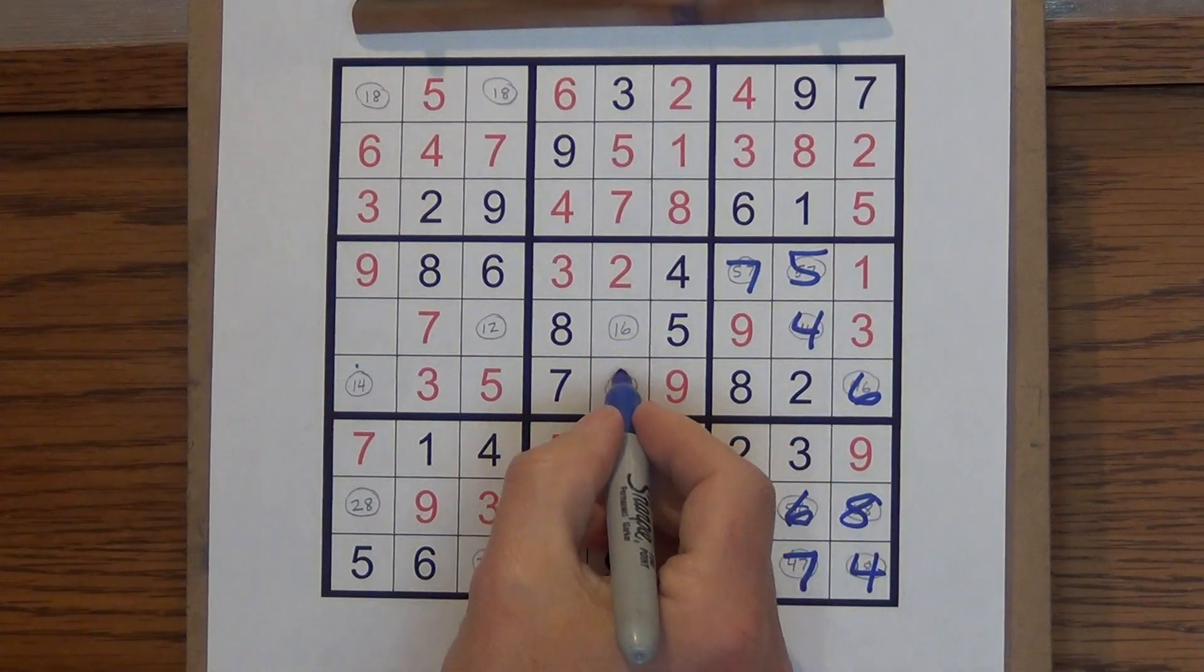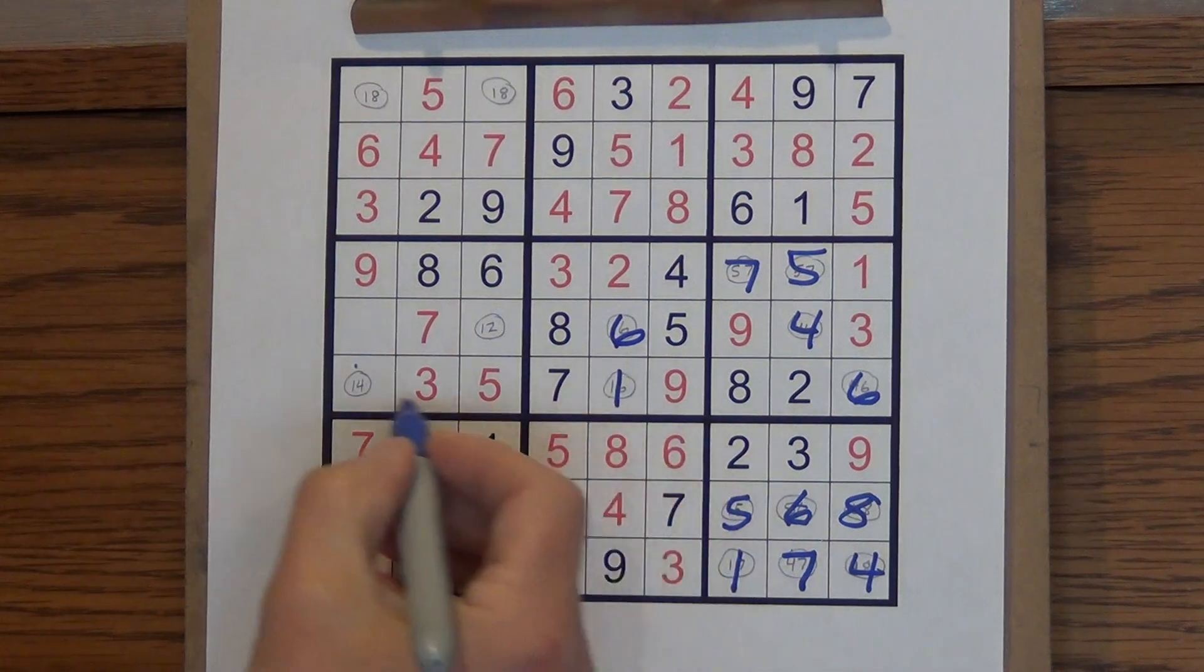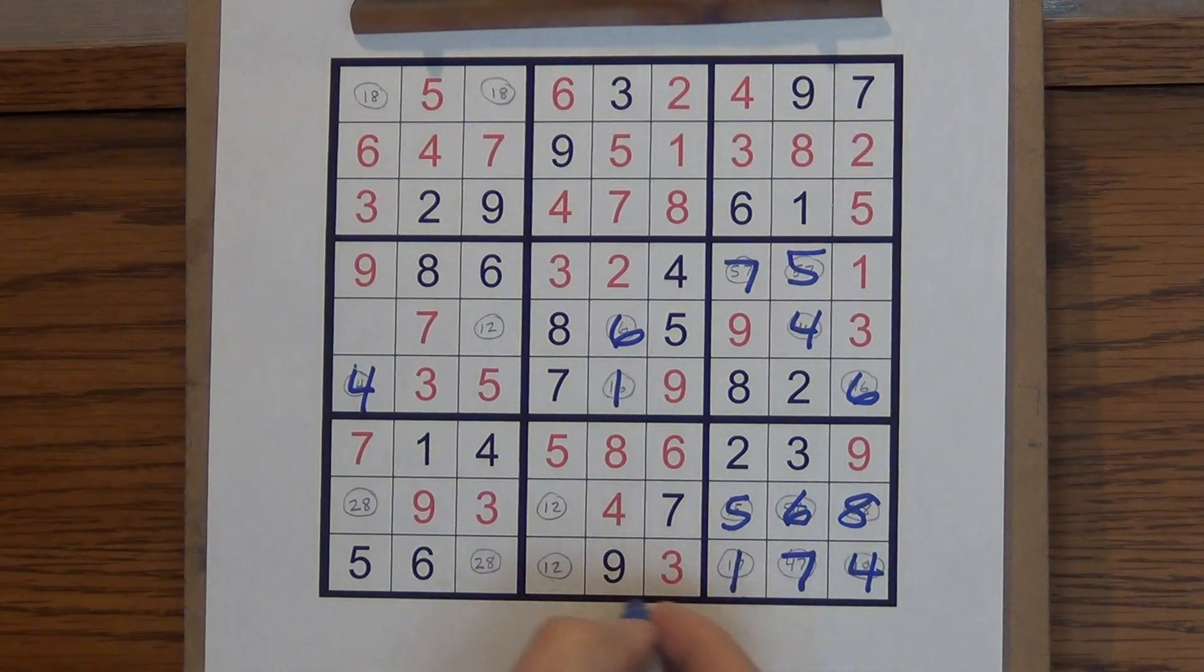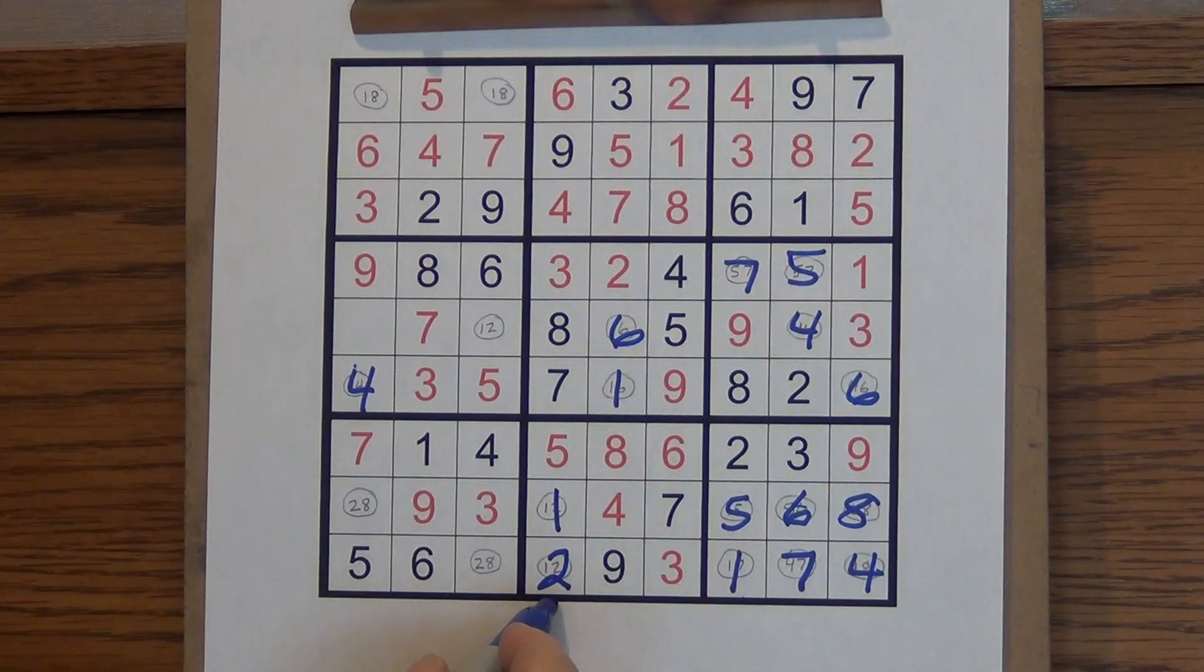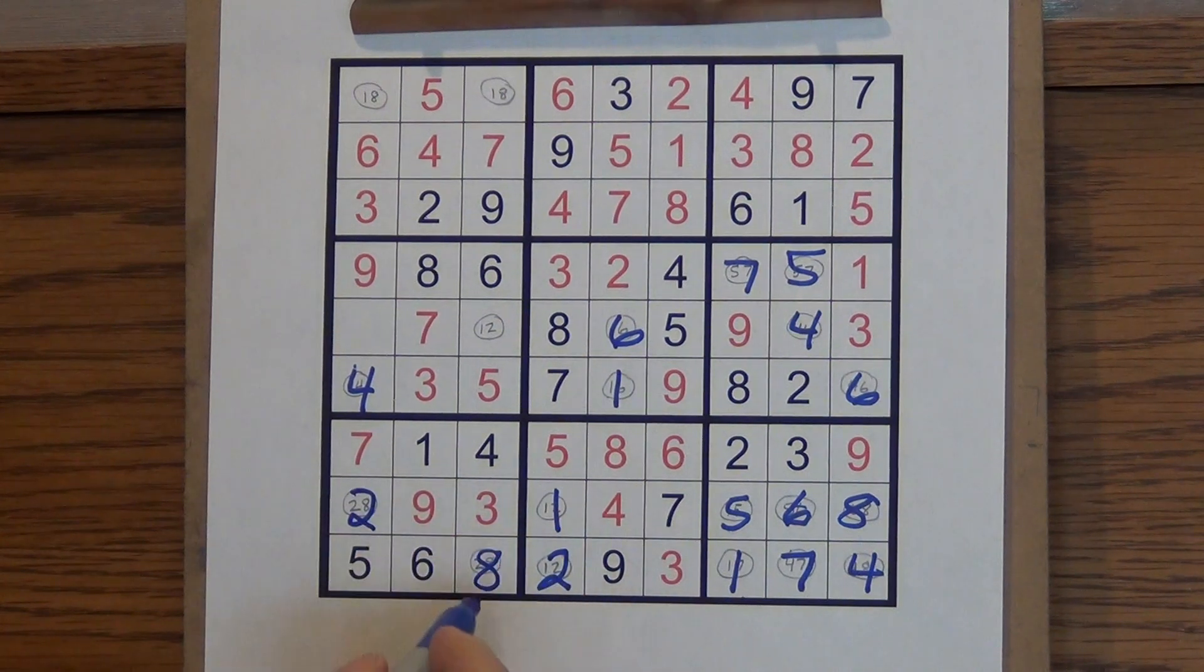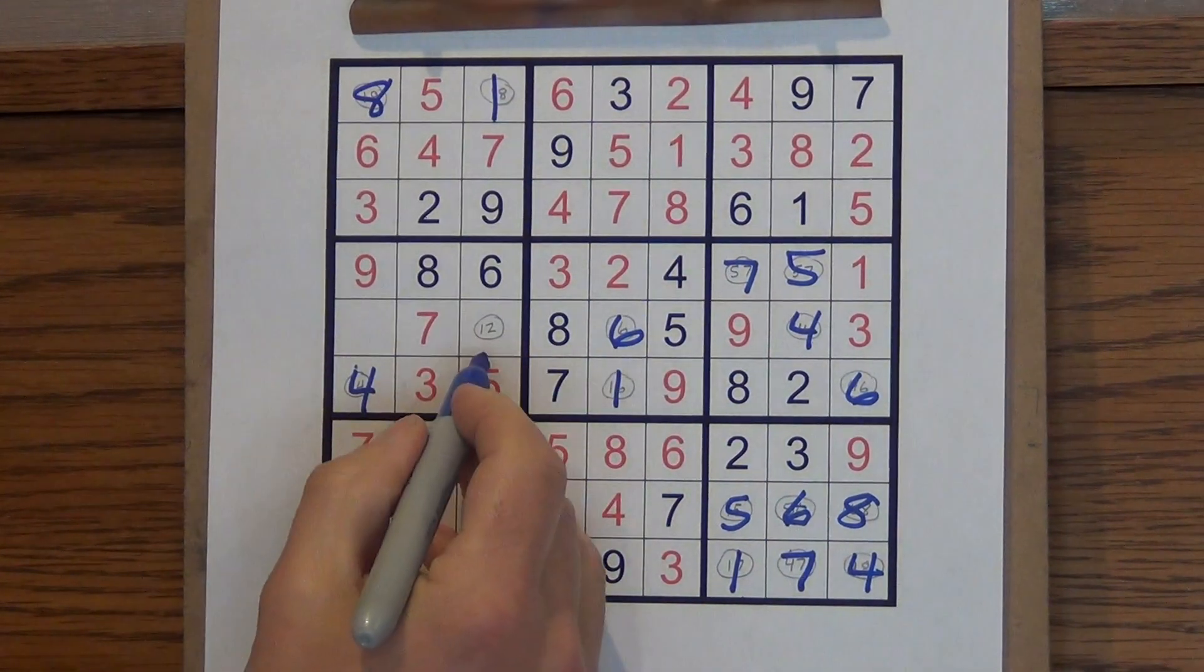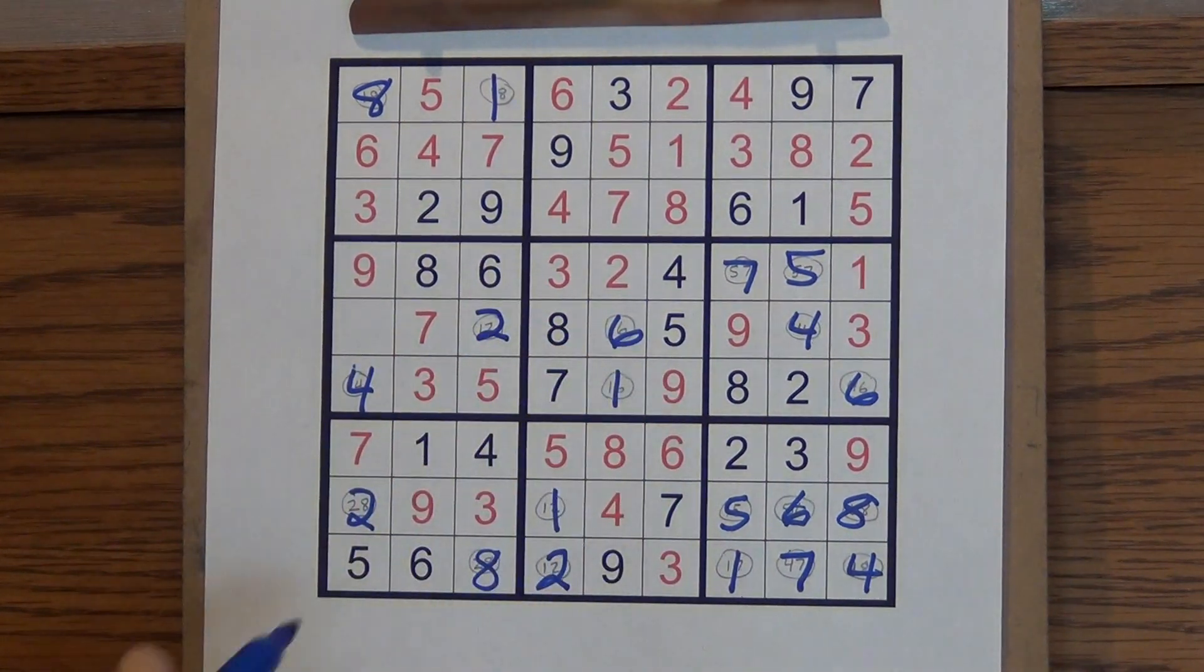So that was a six, so that means this has to be one and six. That was a one, that means this has to be a four. That was one or two, I'll make it a two, and I'll make this a one. Two or eight means this has to be an eight, which means this has to be a two. That's an eight. That had to be one or eight, so it's a one. That had to be one or two. That's a one, so it has to be a two. And the only thing left here again is the one.